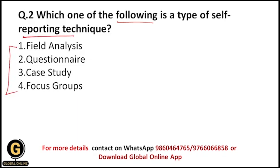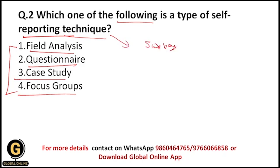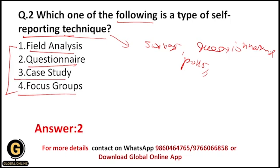Next question: which of the following is a type of self-reporting technique? The options are field analysis, questionnaire, case study, and focus groups. Self-reporting techniques of data collection use surveys, questionnaires, or polls where respondents read the question and select a response by themselves without any interference from the investigator. Therefore the correct answer is questionnaire, because questionnaire is a type of self-reporting technique.